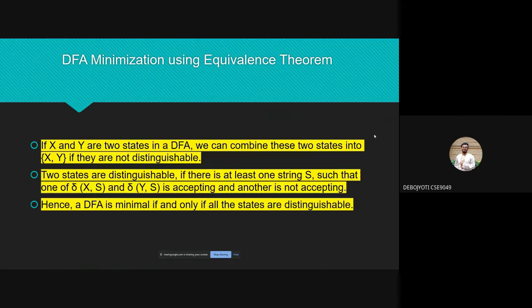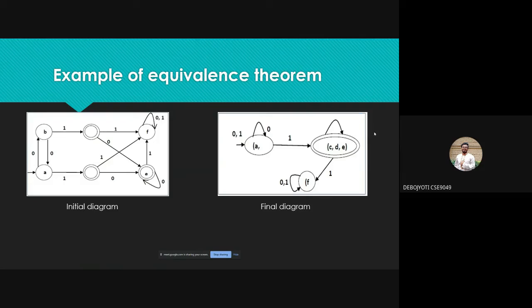A DFA is minimal if and only if all the states are distinguishable. Here are examples of equivalence theorem: from the initial diagram we can see that there are many redundant states. In state A and B, it goes to the second state and the final state. From A and from B we have a final state. There are very redundant states with loops and all.